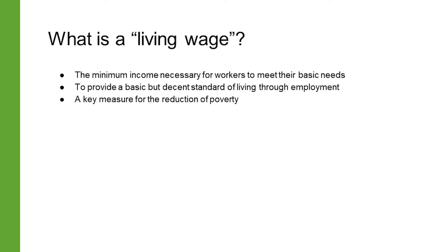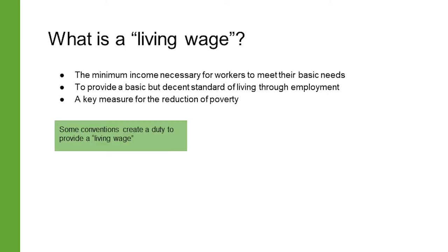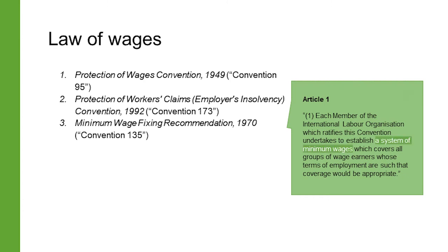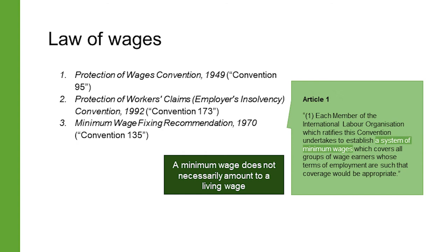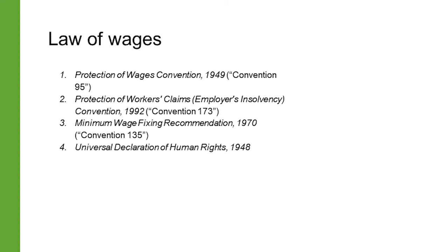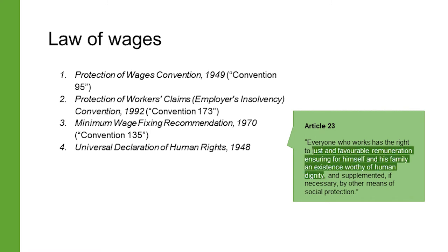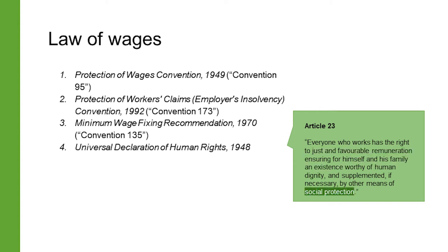These conventions consider the living wage as a key measure to reduce poverty. The Minimum Wage Fixing Convention of 1970 requires ratifying states to establish a process to determine, periodically review, and revise minimum wages. The minimum wage is different from a living wage in that it is purely a minimum set under law and doesn't necessarily take into account whether that income is sufficient for a decent living. A concept quite similar to the living wage can also be found in the UDHR: under Clause 3 of Article 23, everyone who works has the right to just and favorable remuneration ensuring for himself and his family an existence worthy of human dignity, supplemented if necessary by other means of social protection. This right to social protection connects the idea of a living wage with the next aspect: social security.